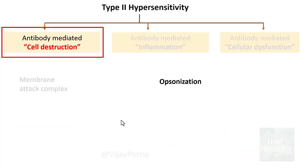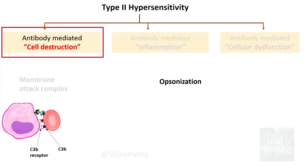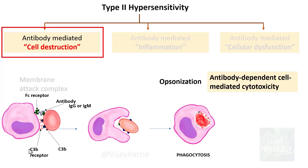The second way cells can be destroyed is by opsonization. This can occur either by complement mediated opsonization, where C3b is identified by the C3b receptor on macrophages, or through the Fc receptor, which binds to antibodies — usually IgG or IgM — on the surface of red blood cells. Binding via either the Fc receptor or C3b receptor ultimately results in phagocytosis. This is referred to as antibody dependent cell mediated cytotoxicity, where the phagocyte destroys the cell, dependent on the antibody.